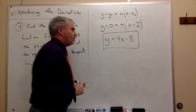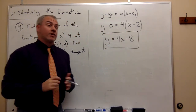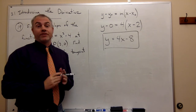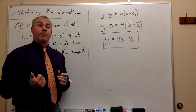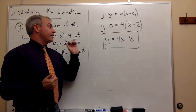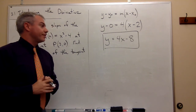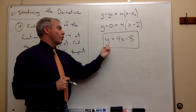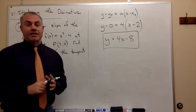So y = 4x - 8 is the equation of the tangent line. The slope at the point is 4, and the line going through that point that is tangent to the curve is y = 4x - 8.